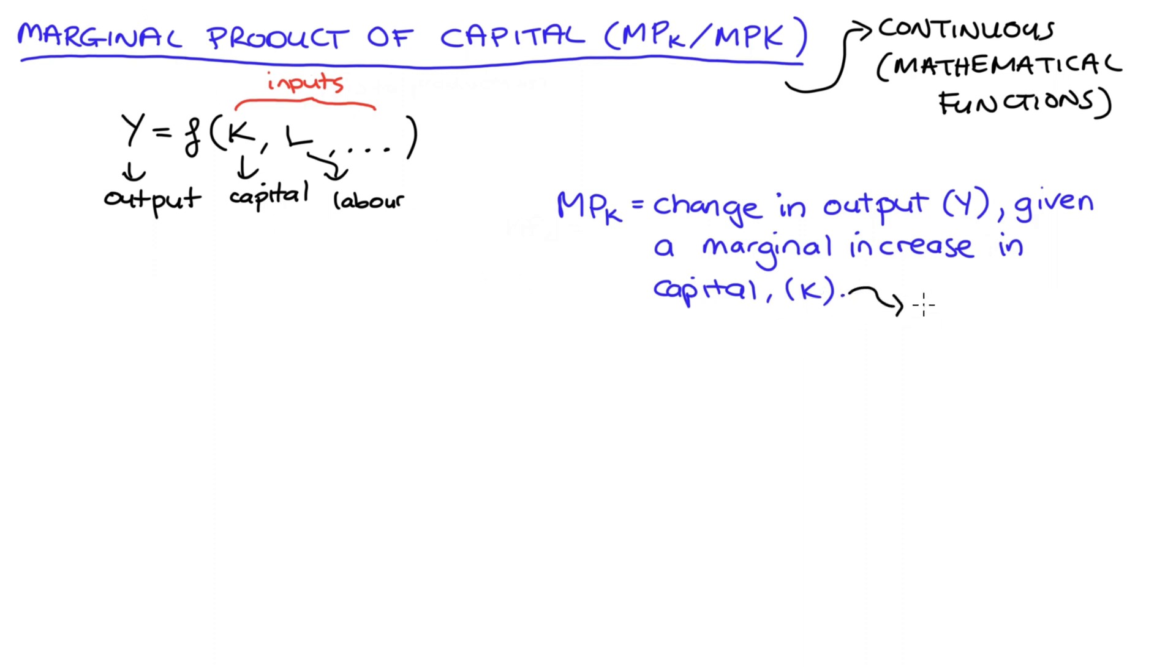When we're using continuous functions to describe our production process, we're going to take the derivative of our production function with respect to capital, and that will give us our marginal product of capital.